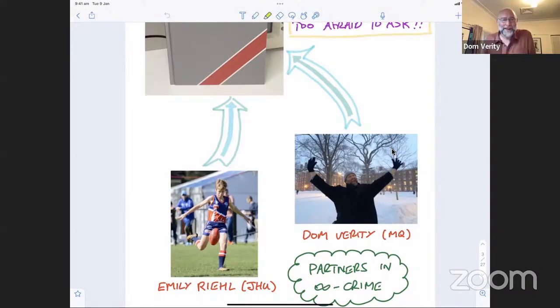I should say that in that photograph, Emily is playing Australian rules football. And people may not know that she actually represented the USA in various international tournaments in what is Australia's national sport, or one of our national sports, I guess the other one being cricket. So you might say that we're partners in infinity crime, and I do hope that we continue to be partners in infinity crime for very many years to come.